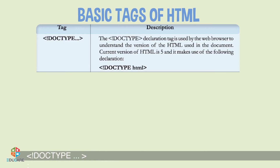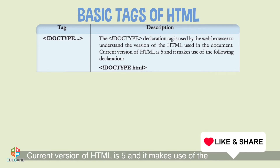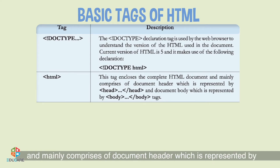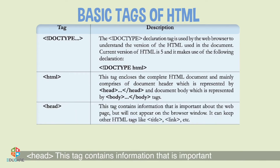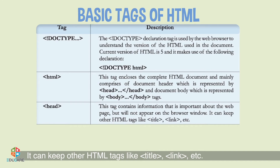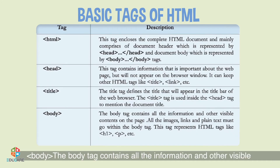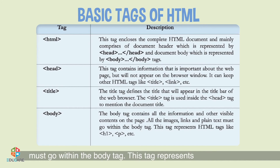Basic Tags of HTML: The Doctype declaration tag is used by the web browser to understand the version of HTML used in the document. The current version is HTML5. The HTML tag encloses the complete HTML document, comprising the document header and document body. The Head tag contains important information about the web page that will not appear in the browser window. The Title tag defines the title that appears in the title bar of the web browser and is used inside the head tag. The Body tag contains all the information and other visible contents on the page — all images, links, and plain text must go within the body tag.